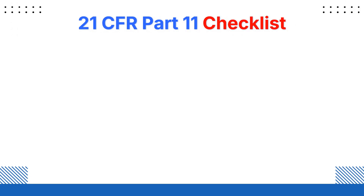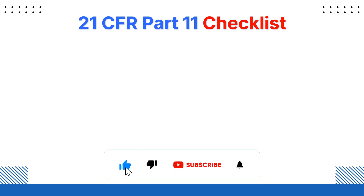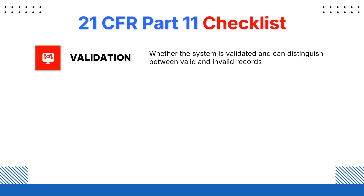When it comes to 21 CFR Part 11 compliance, whenever you generate a system which is compliant to 21 CFR Part 11, there is a checklist which ensures that all these components are present — and only then can we say that this particular system is compliant. Once compliant, only then can it be implemented in clinical research, pharmaceutical, or biotechnology industry. First and foremost is validation: the system being used must be validated, and that validation needs to distinguish between valid and invalid records.